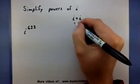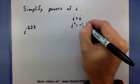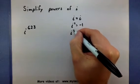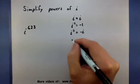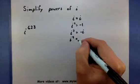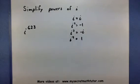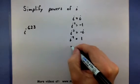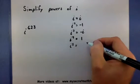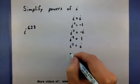So i to the first power is basically i. i squared is a negative 1. i to the third is negative i. And i to the fourth is 1. Now, if I go higher than that, the interesting thing is that this pattern of four numbers actually repeats itself.